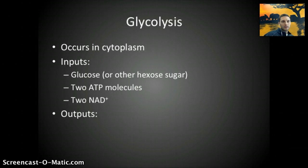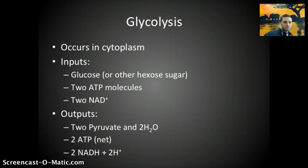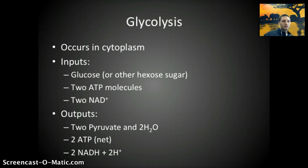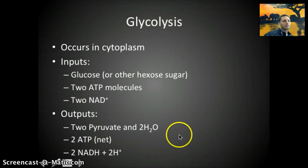To recap glycolysis: it occurs in the cytoplasm. The inputs are glucose or a hexose sugar with six carbons, two ATP molecules, and two NAD+. The outputs are two pyruvates, two water molecules, two net ATP, and two NADH plus two H+. In the next video — respiration part two — we'll look at how pyruvate is used in the link reaction and Krebs cycle to produce more NADH and another molecule called FADH2.